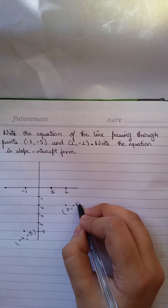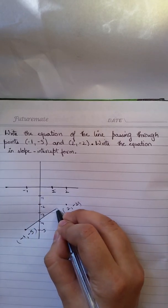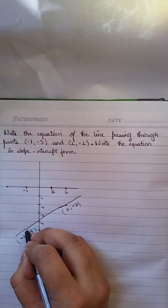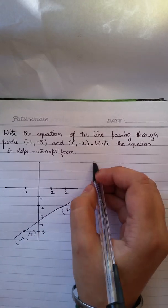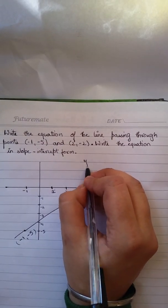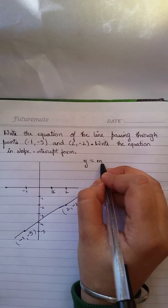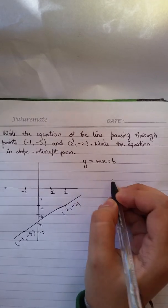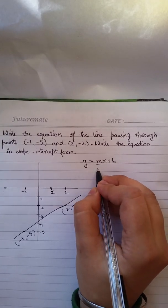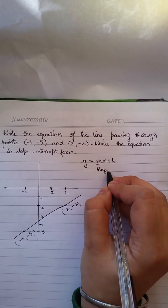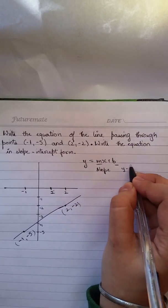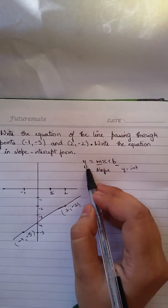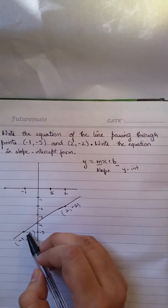And I have to find the equation of this line using the slope-intercept form. The slope-intercept form is y equals mx plus b, where m is my slope and b is the y-intercept, and x and y are any points on this line.